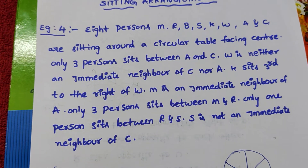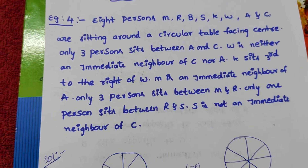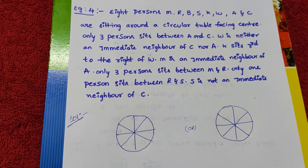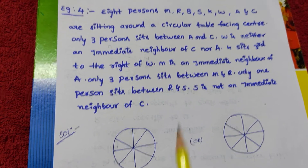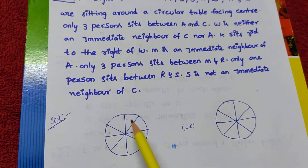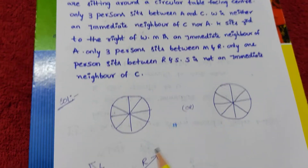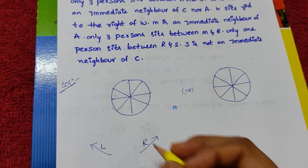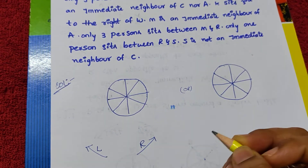Now I am going to solve the question. Here, how many persons are there? 8 persons are there, so I have drawn 8 persons in a circle facing the center. Whenever facing the center, this is the left and this is the right.